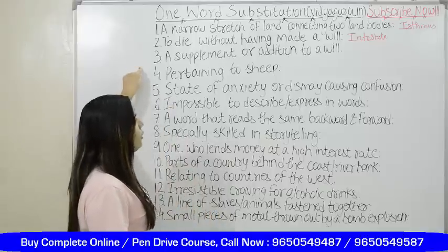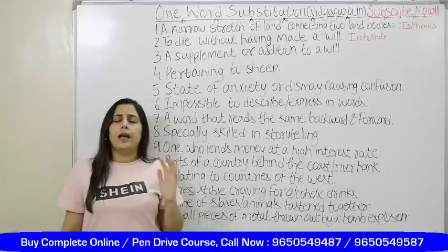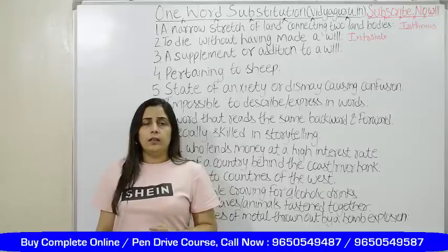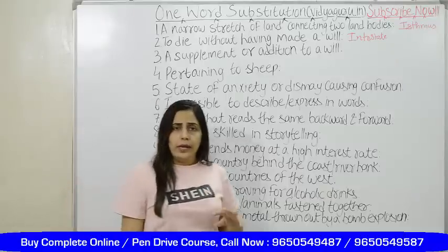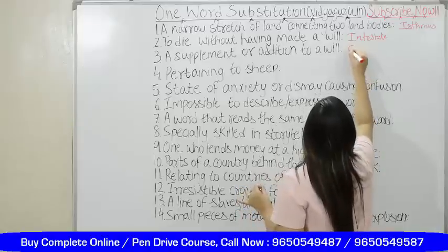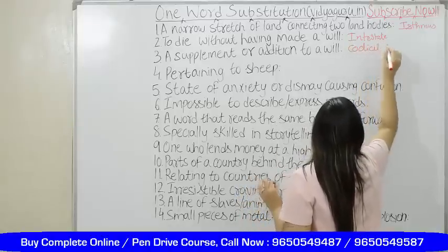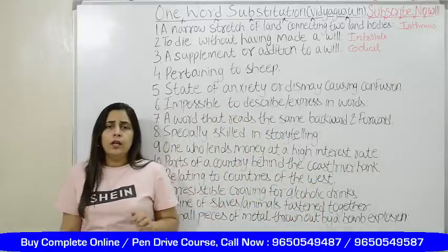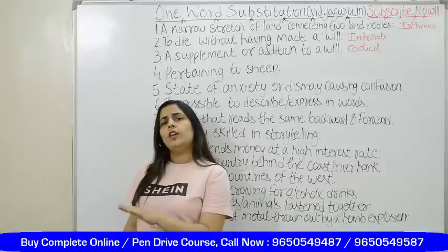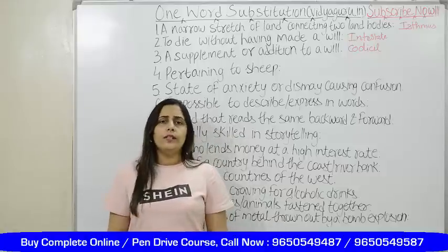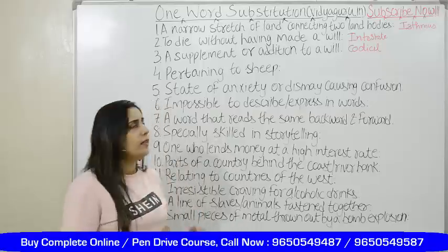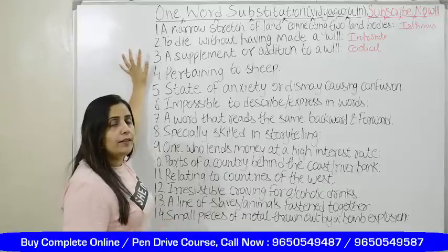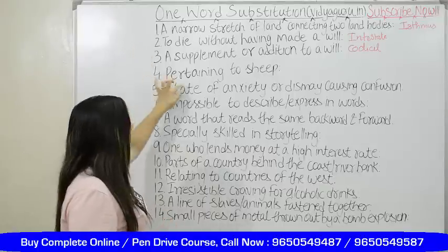A supplement or addition to a will — that was a question straight in the exam. We are talking about the word codicil, which means a will exists and you are adding something to it. That addition is codicil. I am not saying the will itself is codicil. If you are adding something to that will, or making any sort of modification to the previous will, that is also codicil. Codicil is basically a supplement, addition, or modification made to a previous will.